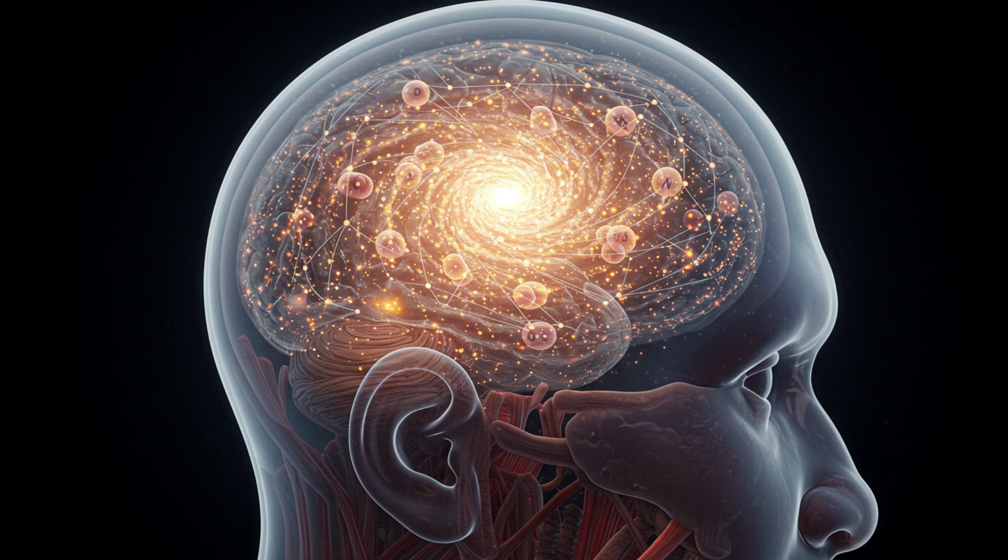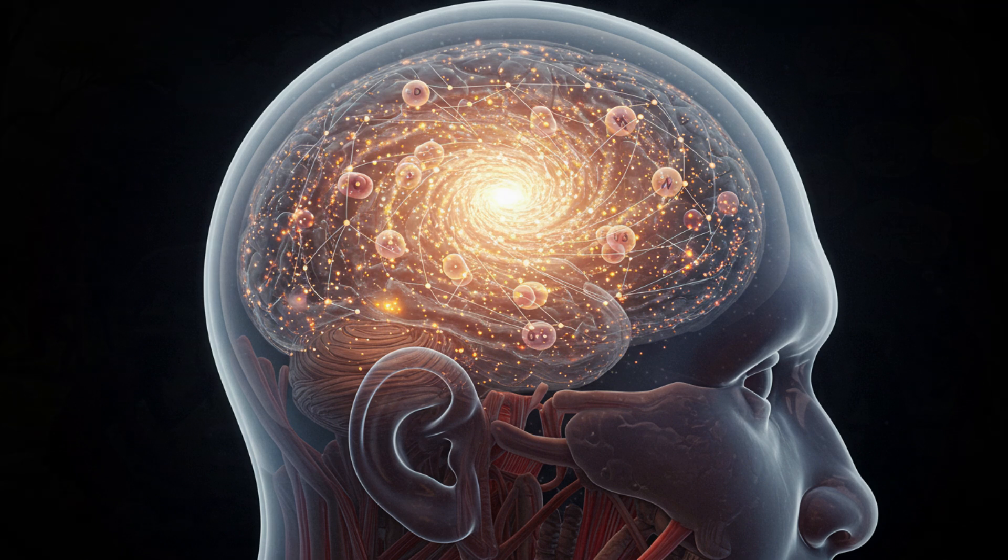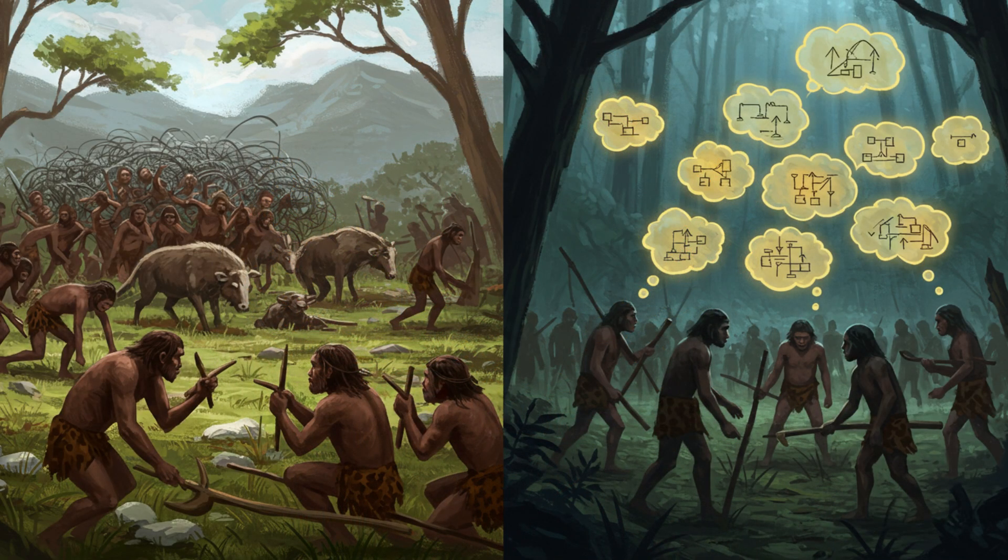That's a crucial point, and that's where things get even more interesting. The researchers proposed that language might have first developed as an internal cognitive tool, a way for early humans to organize their thoughts and make sense of the world around them even before they started using it to chat with each other. So it's like they were having internal monologues, complex thoughts swirling around in their minds. But how on earth could that be advantageous for survival? I mean, wouldn't a well-aimed spear or the ability to run really fast be more useful in those days?